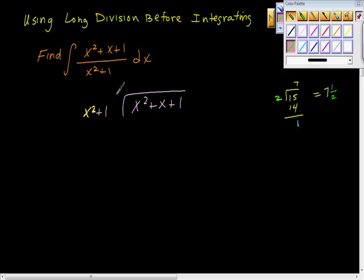See if that doesn't make sense in a second when we try to figure out what to do with our remainder. So I'm just going to start the division here, and I'm going to do x squared divided by x squared, which is 1. And 1 times x squared is x squared.